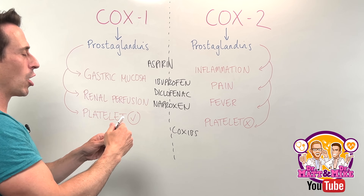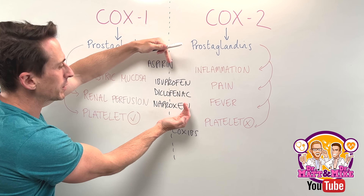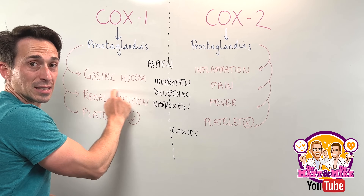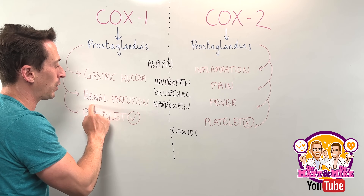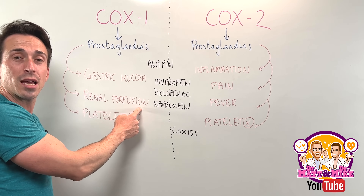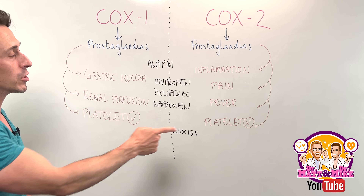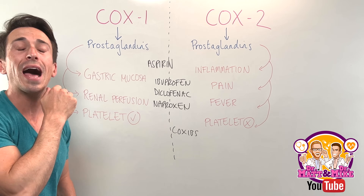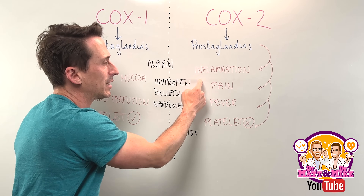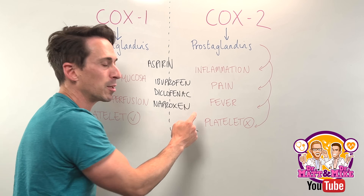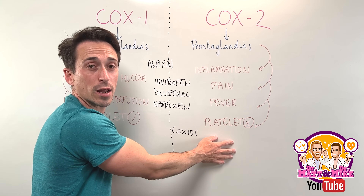You can now look at the possible side effects of each type of NSAID. Those that inhibit COX-1 can obviously have issues with our gastric mucosa, increasing the likelihood of bleeds and ulcers. They can also impair renal perfusion, so people with certain kidney disorders may experience acute kidney injury. Additionally, inhibiting platelet production is one reason why low-dose aspirin is used for people at risk of cardiovascular disease. The COX-IBs, because they inhibit COX-2, are effective as anti-inflammatories, analgesics, and antipyretics, but they increase platelet production, which may be an issue for people at risk of cardiovascular disease.